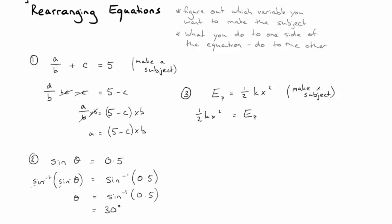Right, I'm trying to get the X on its own. So what I could do is try and get rid of this half, so I could multiply both sides of the equation by 2. That 2 would cancel with the half, and I'd be left with K X squared is 2 E P. I want to get the X on its own, so if I divide both sides by K, those K's cancel, so I'd be left with X squared equals 2 E P on K.